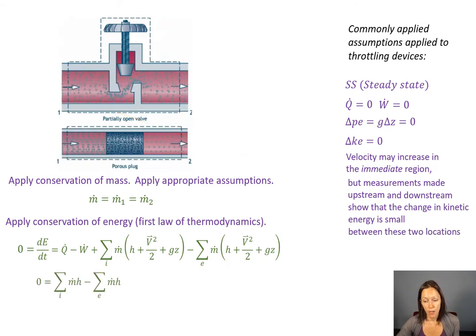And so if I go back to my first law and I make all of those assumptions, all I'm left with are the m dots and the h's. And if I kind of bring everything out, bring everything together, I've got m dot one and h one equals m dot two and h two. And then I look back in my conservation of mass and I see, well, those m dots are exactly the same. So what I'm left with is h one and h two are equal to one another.